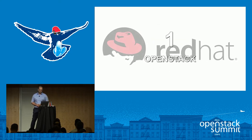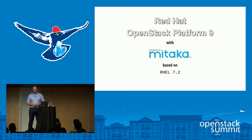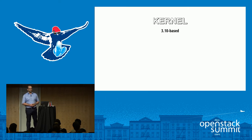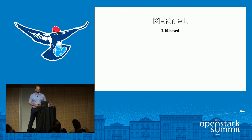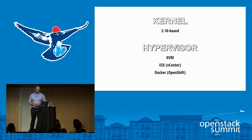Let's look at Red Hat. For OpenStack, they have a product called Red Hat OpenStack Platform. It's version 9, coming with Mitaka, based on their Enterprise Linux version 7.2. The kernel version in this product is 3.10 — don't take that as an old kernel, there are a lot of patches. For enterprises, it's not always necessary to have the latest bleeding-edge kernel. The available hypervisors are KVM, vCenter ESX, and Docker via OpenShift. If you use this solution, you're stuck with one of these.